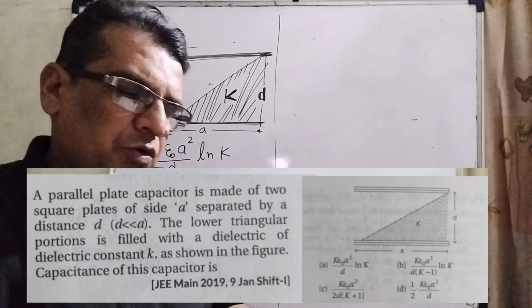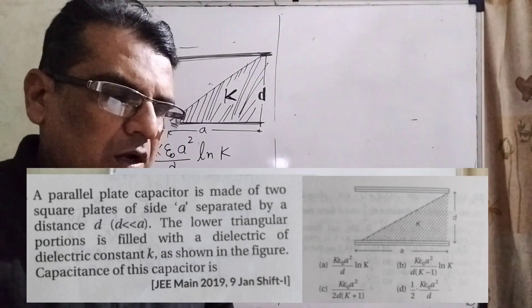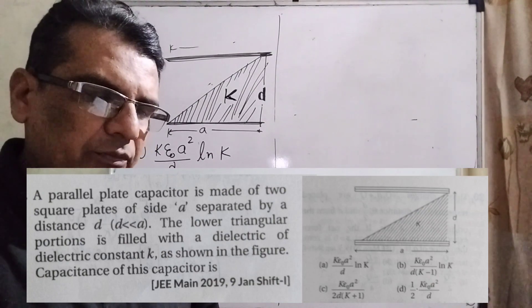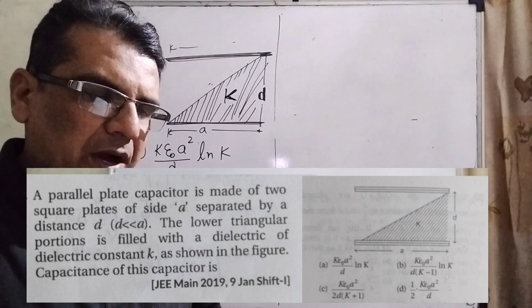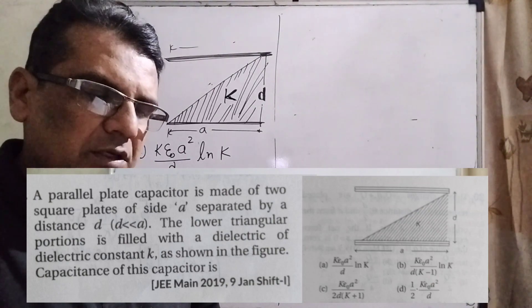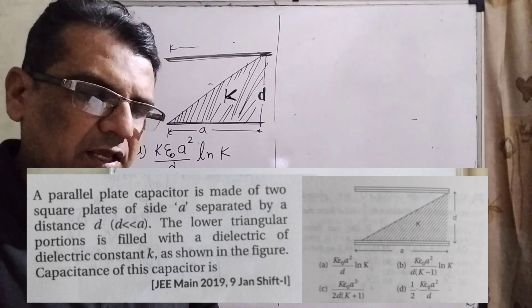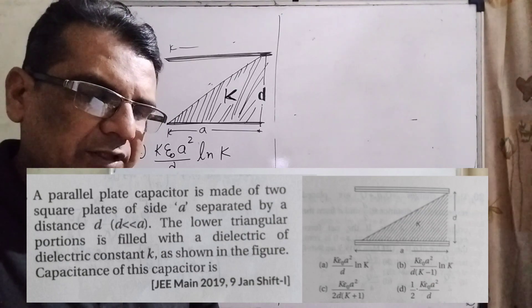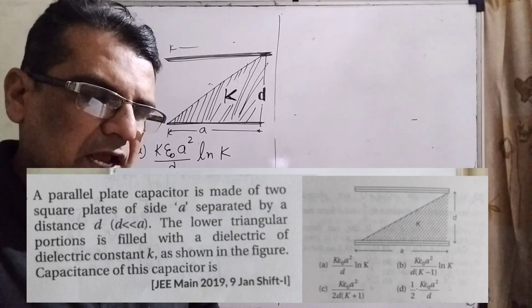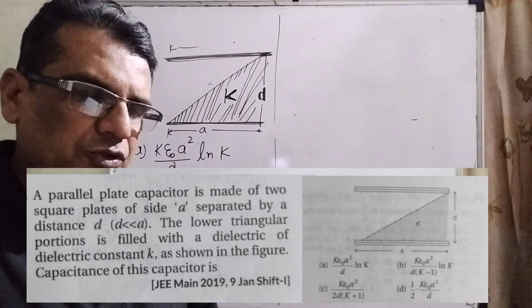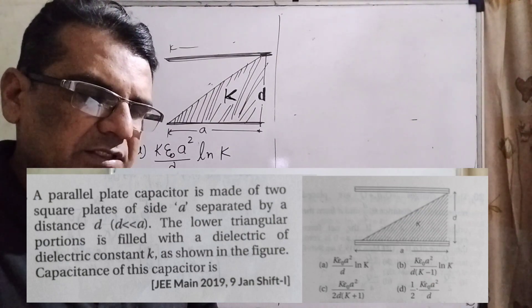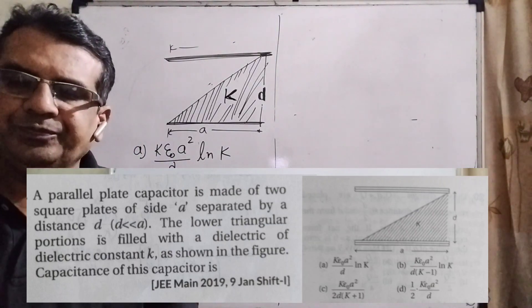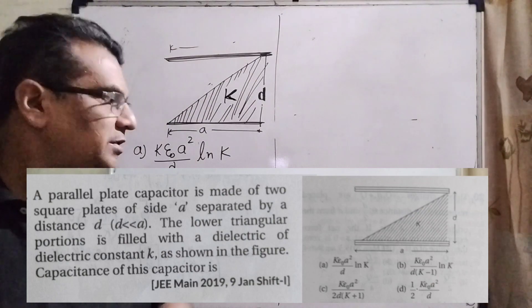Now, the question is: a parallel plate capacitor is made of two square plates of side A, separated by a distance small d, where d is much less than A. The lower triangular portion is filled with a dielectric of dielectric constant K, as shown in the figure. The capacitance of the capacitor is — you are given four options.